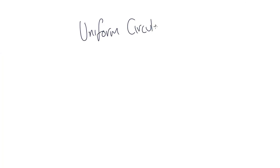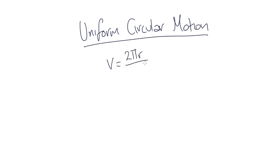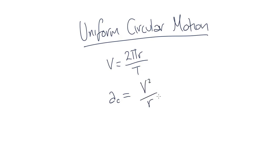Thus far, we've found that the velocity of uniform circular motion is equal to 2πr, the radius, over big T, the period of the revolution. We've also found the centripetal acceleration of uniform circular motion is equal to v squared, the velocity squared, divided by r, the radius.